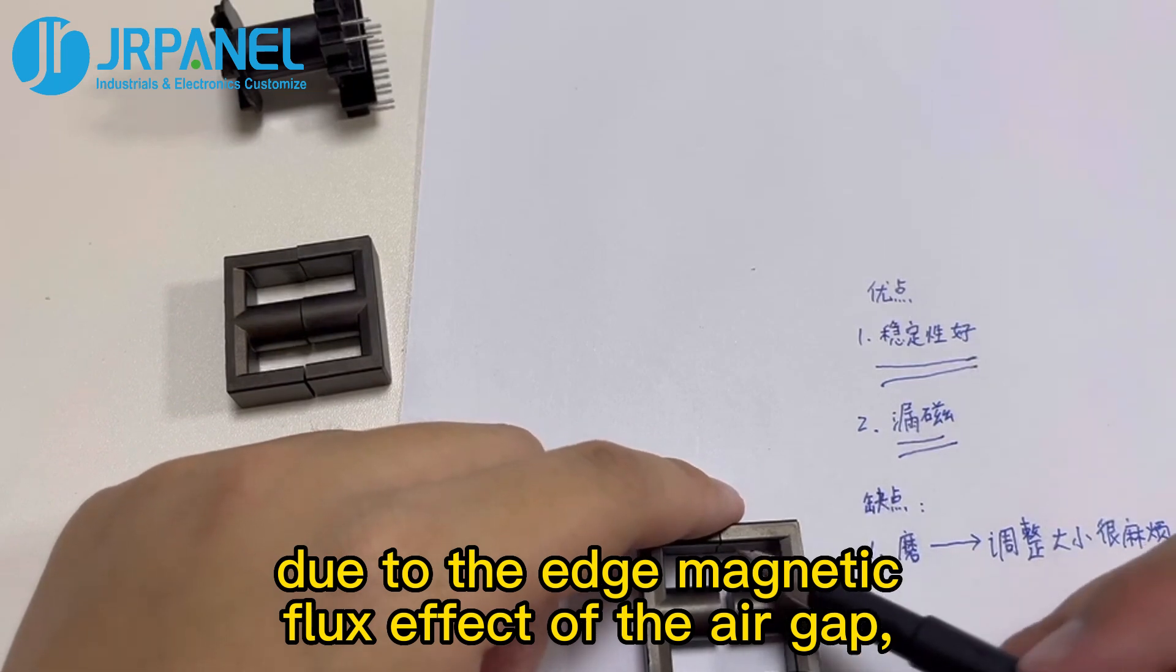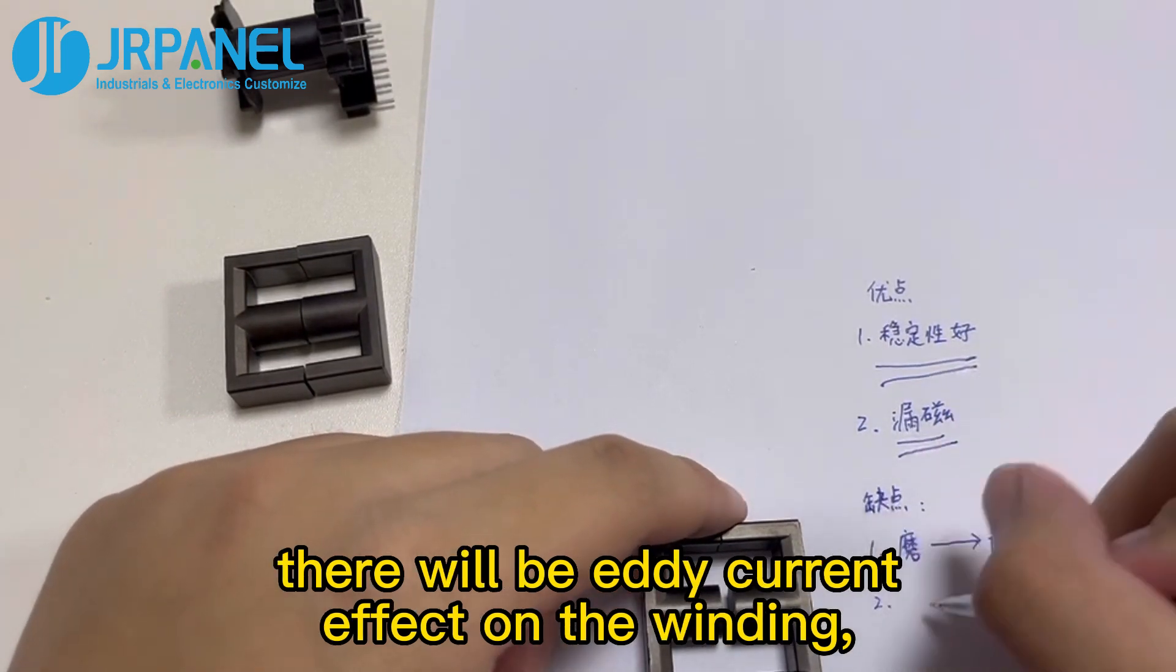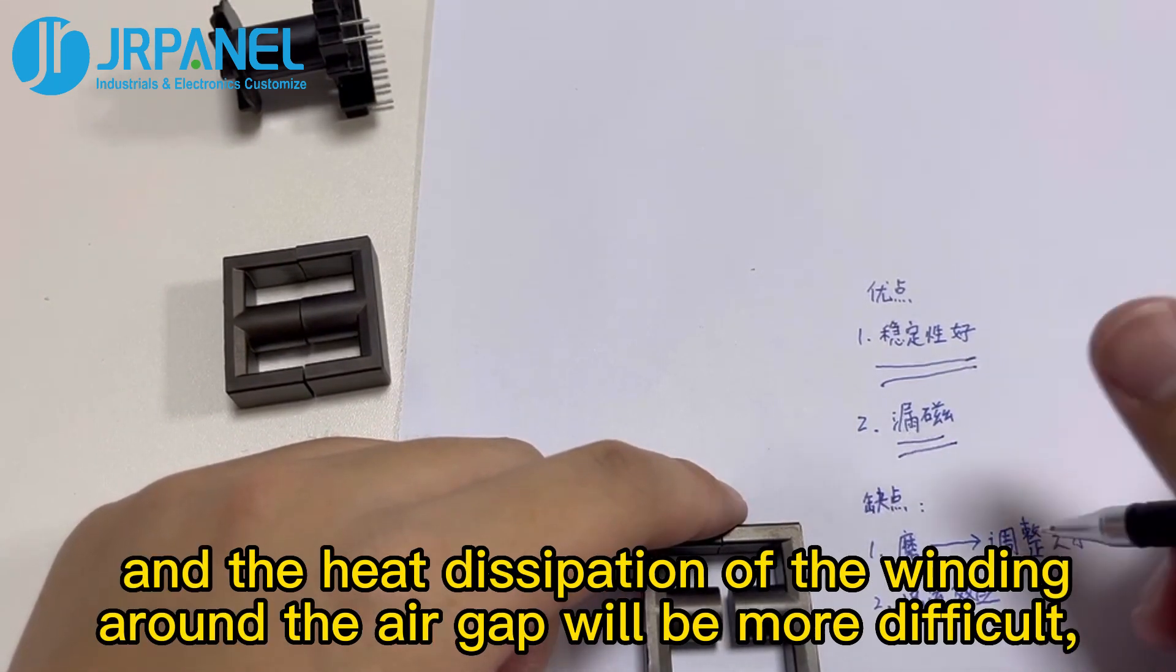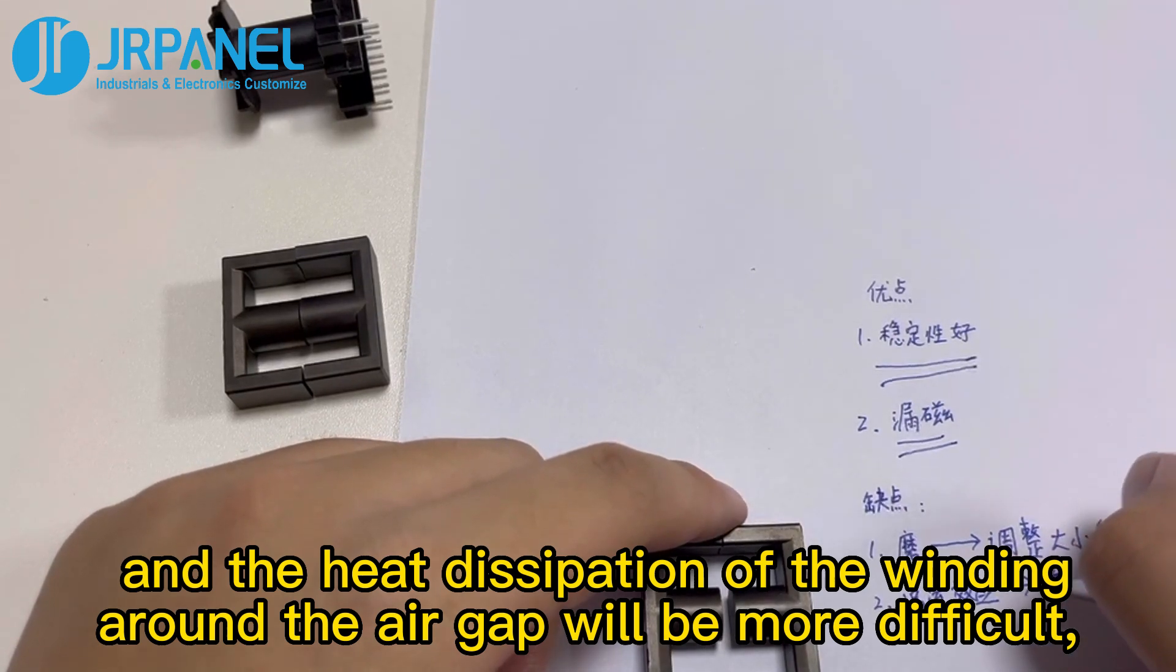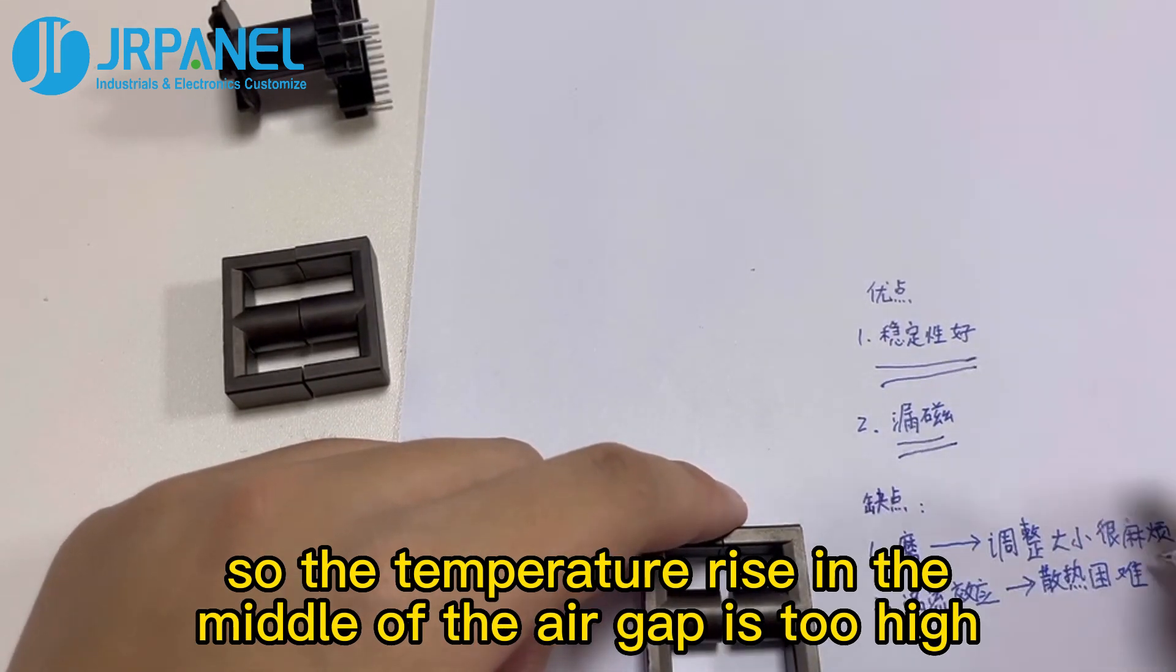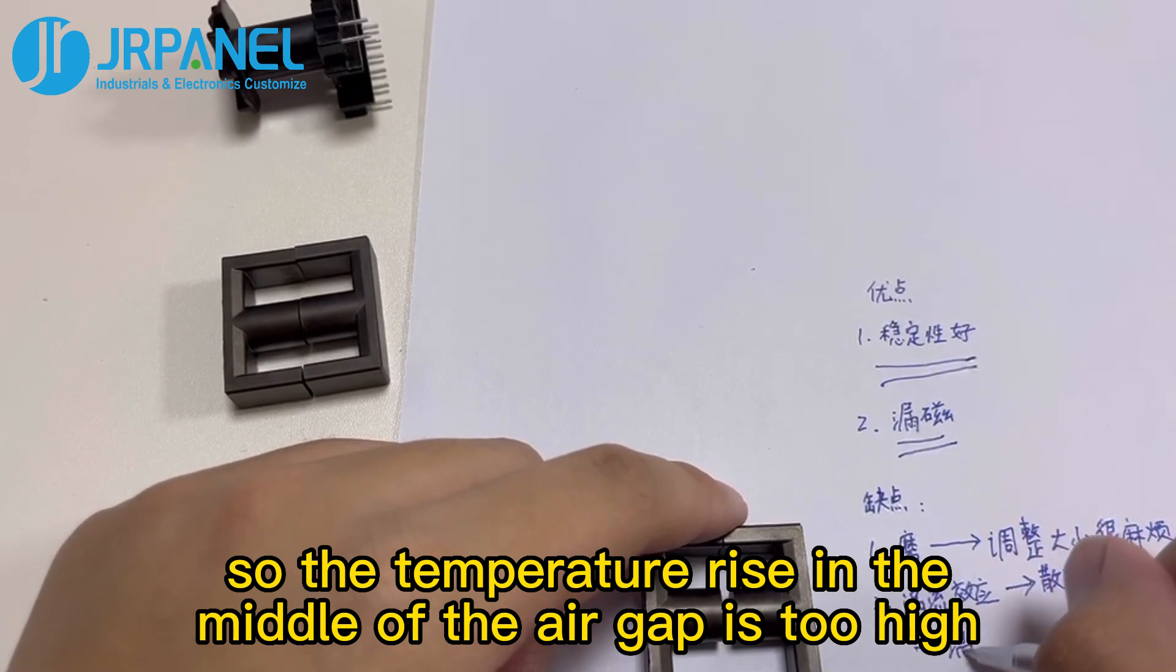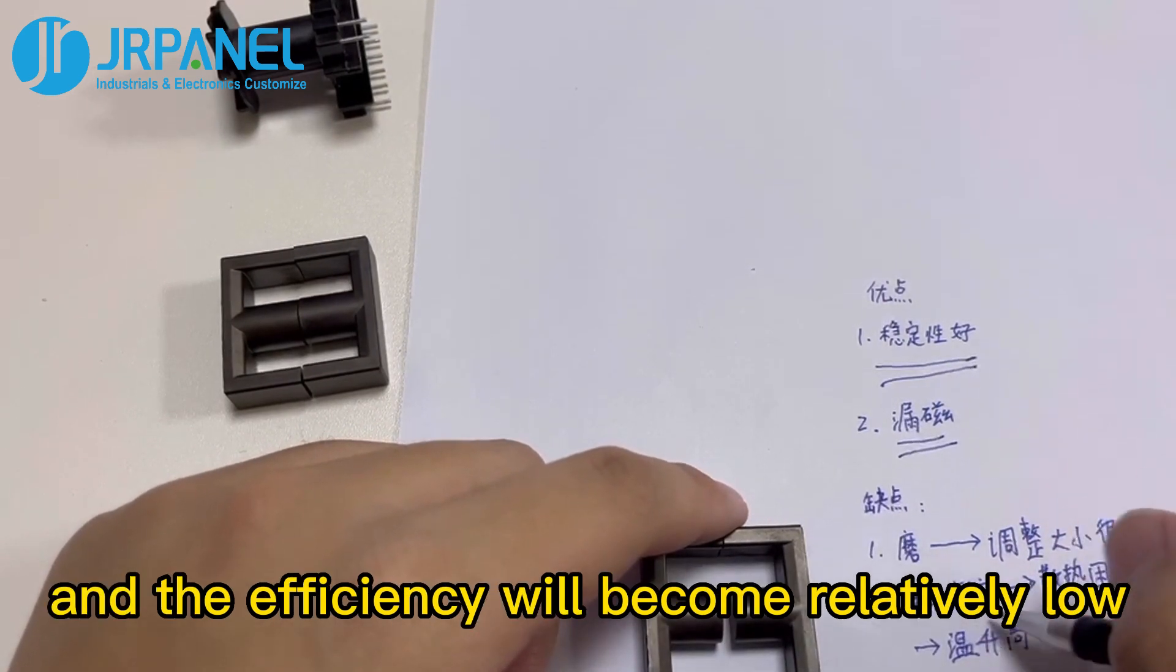In addition, due to the edge magnetic flux effect of the air gap, there will be eddy current effect on the winding. And the heat dissipation of the winding around the air gap will be more difficult. So the temperature rise in the middle of the air gap is too high, and the efficiency will become relatively low.